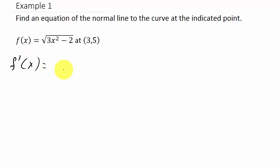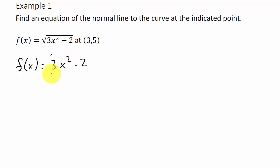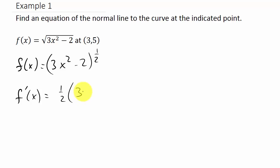So f prime of x equals — first let's rewrite our function. f of x is equal to 3x squared minus 2, raised to the 1 half. Now we can use the chain rule. So I'm bringing the 1 half down, times 3x squared minus 2, subtract 1 — so that's to the negative 1 half — times the derivative of what's inside the parentheses, which is 6x. I'm using the chain rule here to find the derivative.